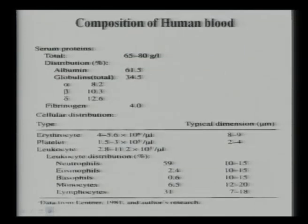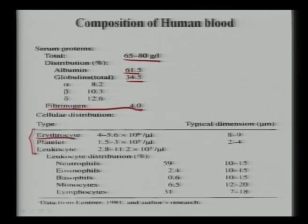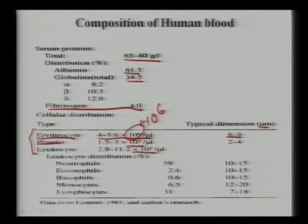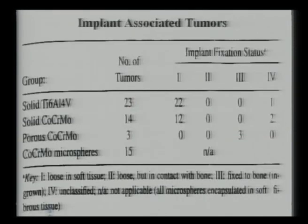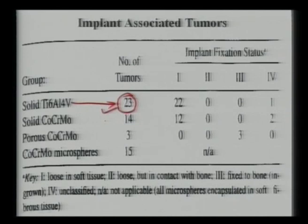Implant-associated tumors: in patients investigated for different metallic solids like Ti-6Al-4V, there is a tendency to cause tumors, and if malignant, these can cause cancer. Solid cobalt-chrome-moly alloys have caused 14 tumors in investigated cases; cobalt-chrome-moly microspheres have caused 15. These tumors can indicate genotoxic damage — DNA damage — which disqualifies the material from implant use. I must emphasize that Ti-6Al-4V and cobalt-chrome-moly have very good mechanical properties but can cause genotoxic effects when implanted for longer durations.